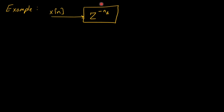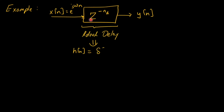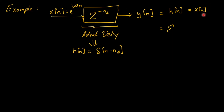As an example, consider an ideal delay system where z indicates a delay and integer nd defines the amount of delay. Giving complex exponential e to the power j omega n as input, the impulse response h of n is a delta function delta of n minus nd, defining the delay amount. The output y of n is the convolution of h of n with x of n, giving the summation of h of k times x of n minus k.